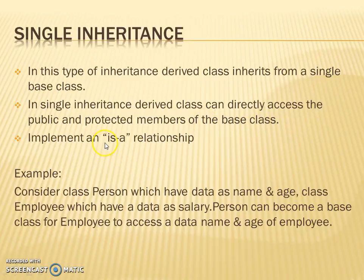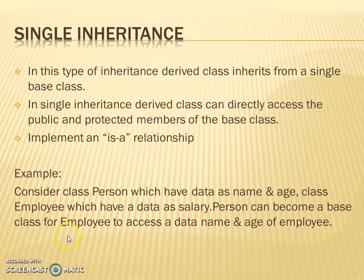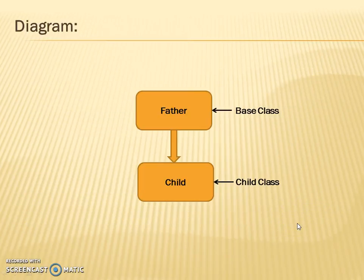Single inheritance implements an 'is-a' relationship. For example, consider a class Person which has data members name and age, and a class Employee which has a data member salary. Person can become a base class for Employee to access the data name and age of the employee.